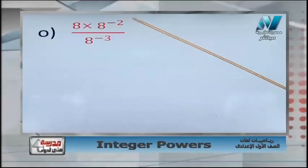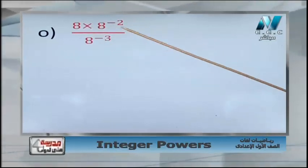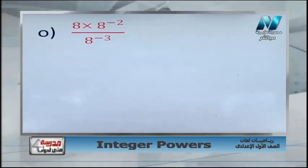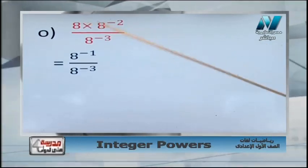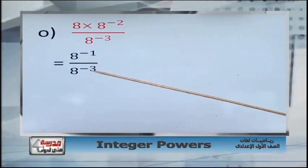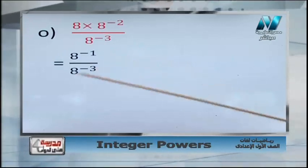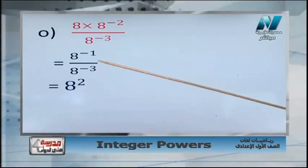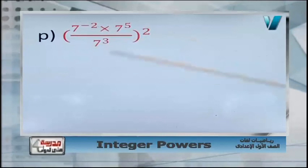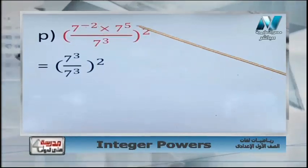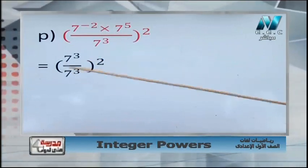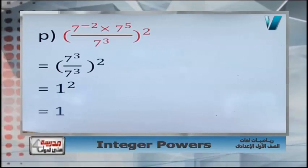Another example: a times a power negative 2, over a power negative 3. Work on the numerator first — same base a: 1 plus negative 2 equals negative 1. Now dividing: a power negative 1 over a power negative 3 — subtract: negative 1 minus negative 3 equals 2. Answer: a power 2. A similar example with brackets follows the same steps, giving a final answer of 1.